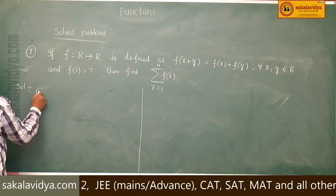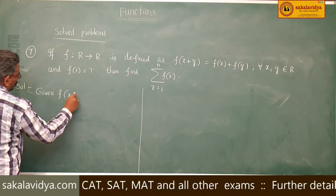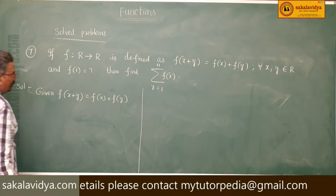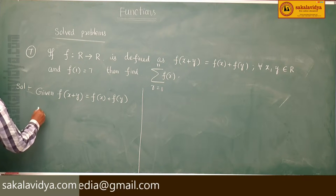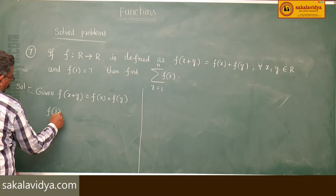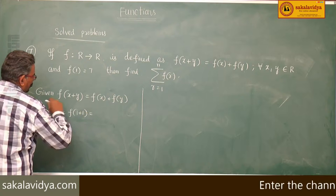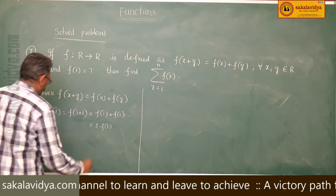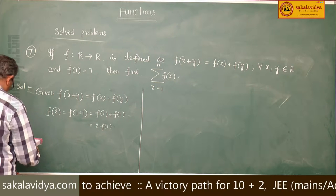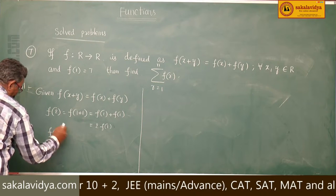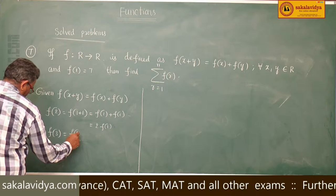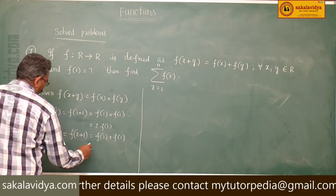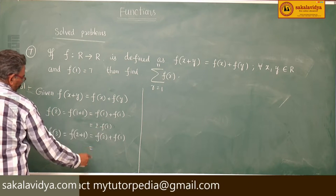Given: f of x plus y equals f of x plus f of y. Now let us find f of 2. f of 2 means we can write f of 1 plus 1, which by definition is f of 1 plus f of 1, giving 2 f of 1. Next, f of 3 means f of 2 plus 1, which equals f of 2 plus f of 1. We know f of 2 is 2 f of 1, so this becomes 3 f of 1.